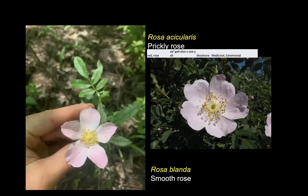The true roses are the genus Rosa. Two of the most common species here in Colorado are the prickly rose — used medicinally and ceremonially by the Shoshone people — as well as the smooth rose, lacking the really nasty prickles. In general, the rose hip — the mature fruit of the genus Rosa — is a really important food source for bears and lots of other things; it is used medicinally and is very high in vitamin C, so good to make a tea out of.